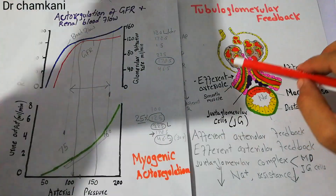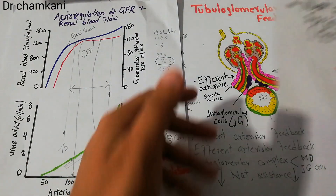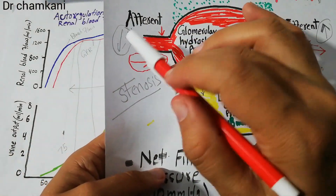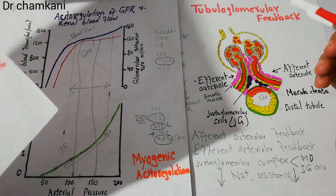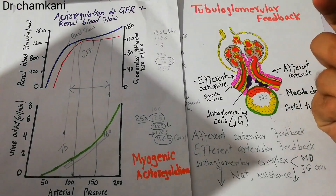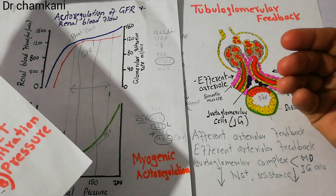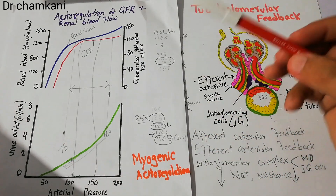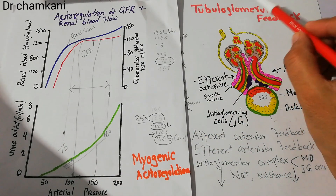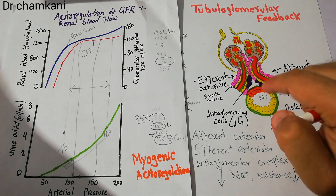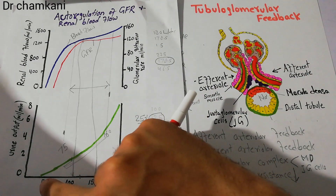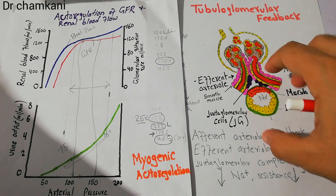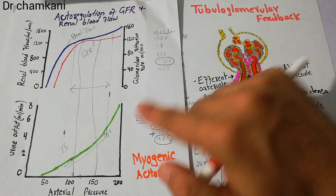Enlarging further, we see the glomerular capillaries with the afferent and efferent arterioles. The tubuloglomerular feedback mechanism involves hormones and is a lengthy process. It works only when sodium levels fall in the distal tubule due to decreased arterial pressure — only then does it try to restore GFR and renal blood flow. The myogenic mechanism works differently.